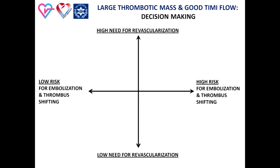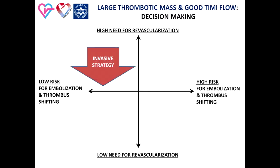In order to direct decision-making regarding invasive versus pharmacological strategy, a two-axis framework is used. The horizontal axis represents the risk of complication during the invasive procedure, ranging from low risk on the left to higher risk on the right. The vertical axis represents the need to improve the reperfusion rate. The upper-left group includes cases with low risk of complication and higher need for revascularization — in this group, performance of an invasive procedure is preferred.